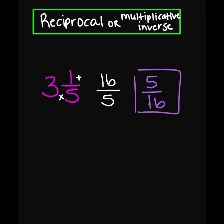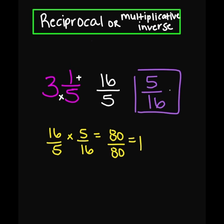Let's go ahead and check our work to make sure. We have 16 over 5 times 5 over 16. 16 times 5 in the numerator is 80, and 5 times 16 in the denominator is also 80. So 80 divided by 80 equals 1, so we know that 5 over 16 is the correct answer. Remember, when you are checking your work, the number times the reciprocal has to equal 1. If it equals 1, then you know that you have the correct answer.